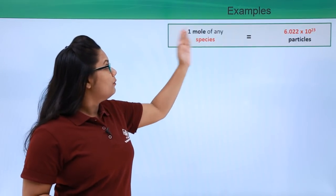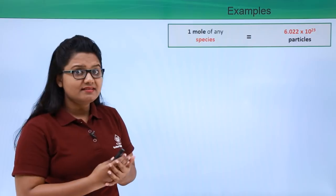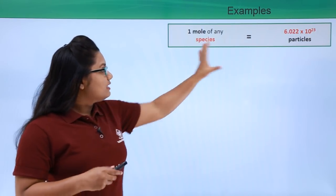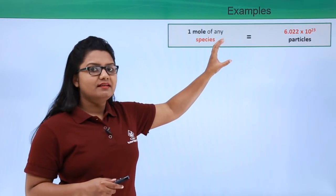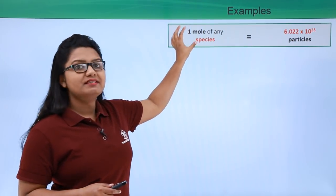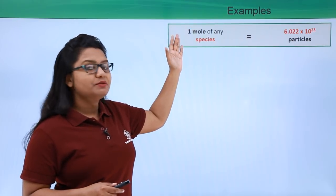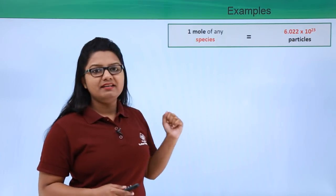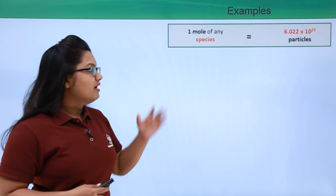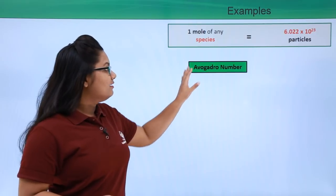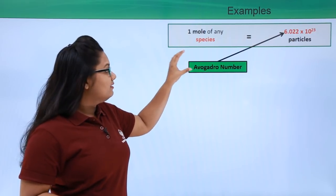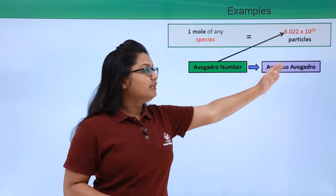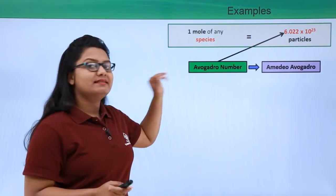One mole of any species has a fixed number of particles — 6.022 × 10²³ particles. This fixed number is independent of the species. This fixed number of particles has a separate name: it is called Avogadro's number, named after Amedeo Avogadro, who was the discoverer of this concept.